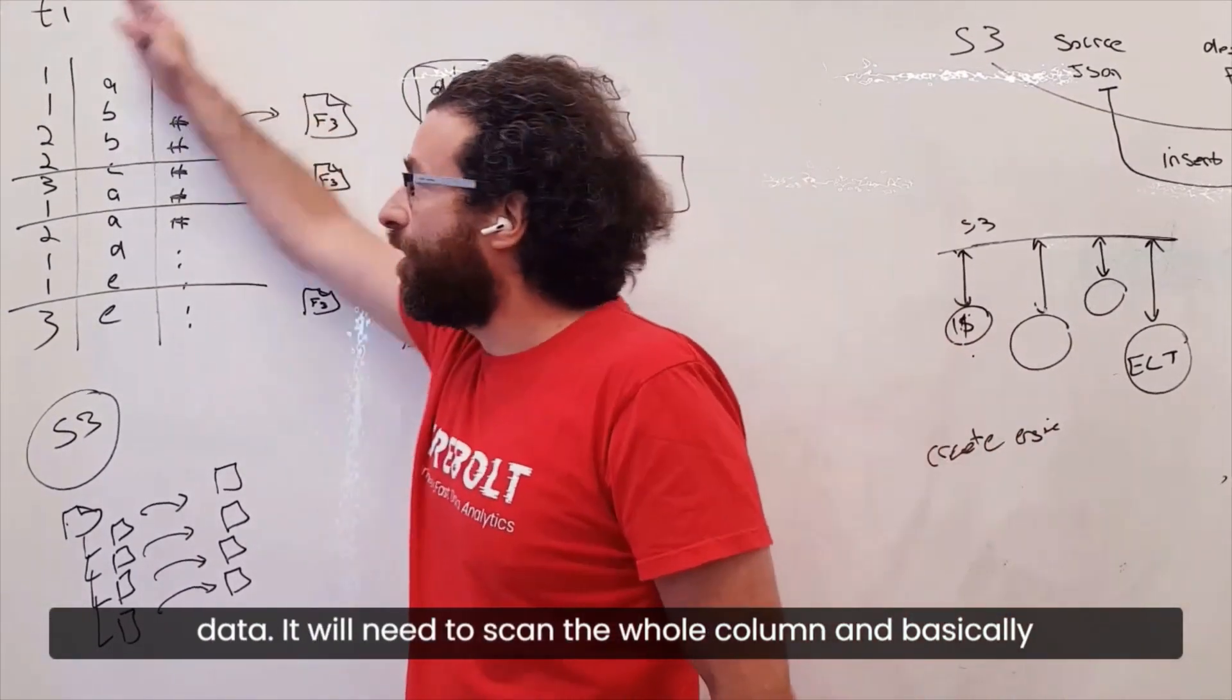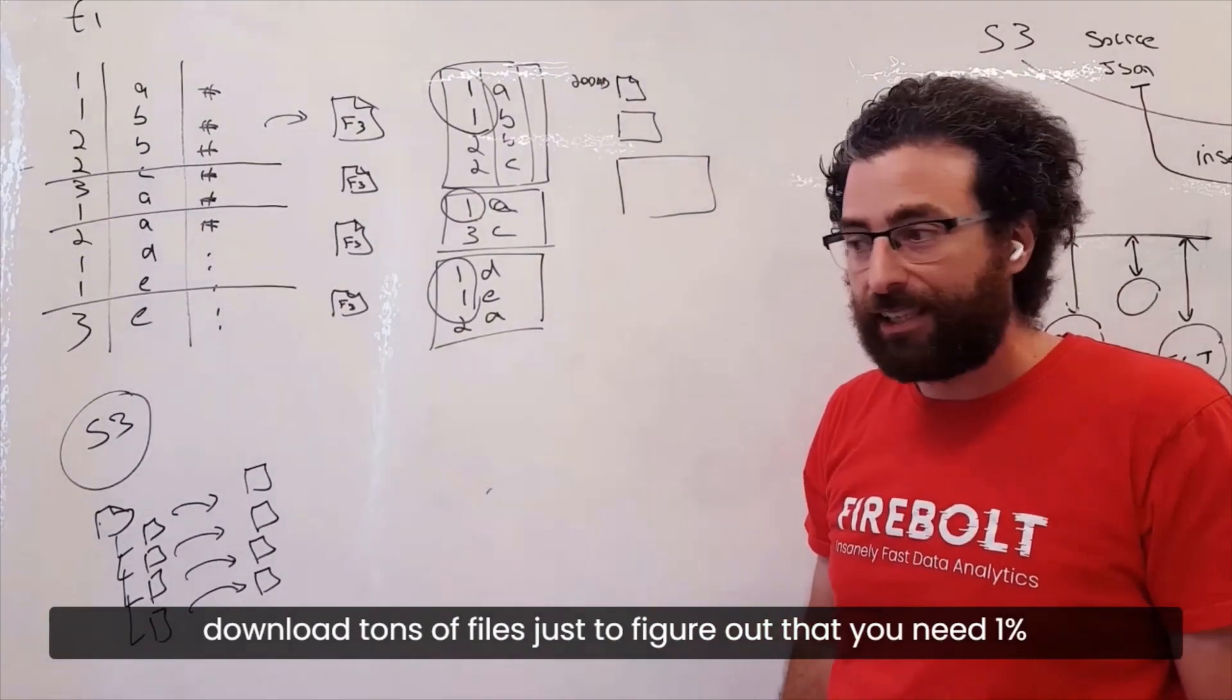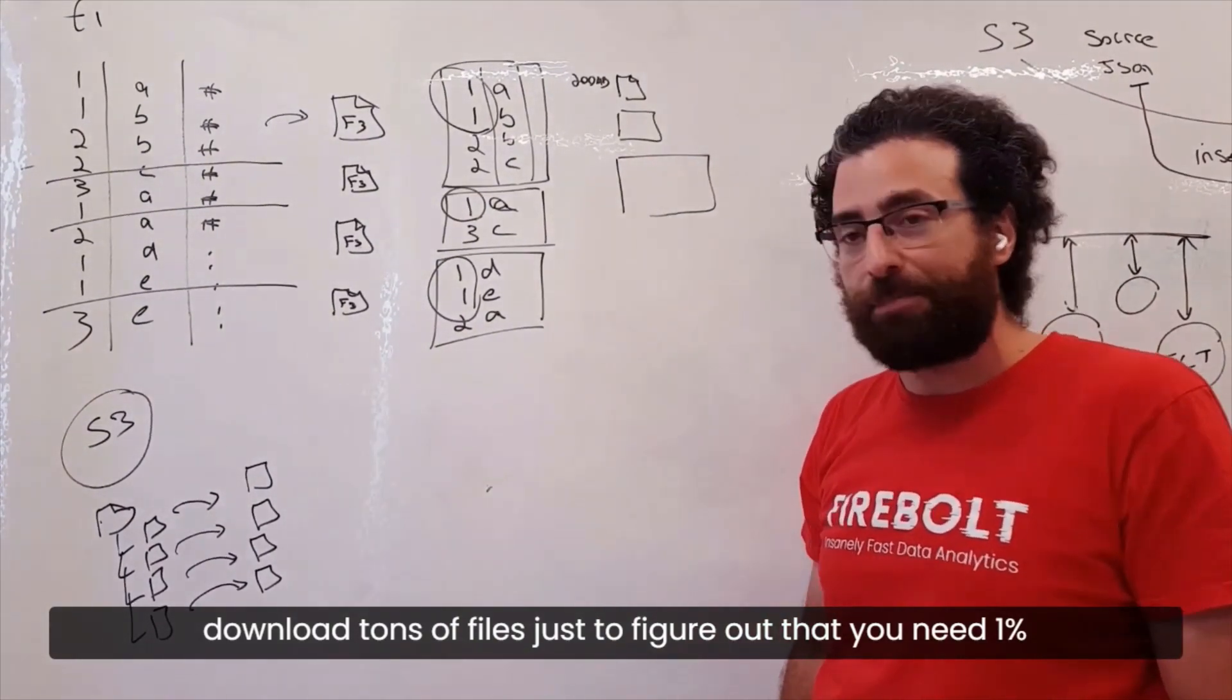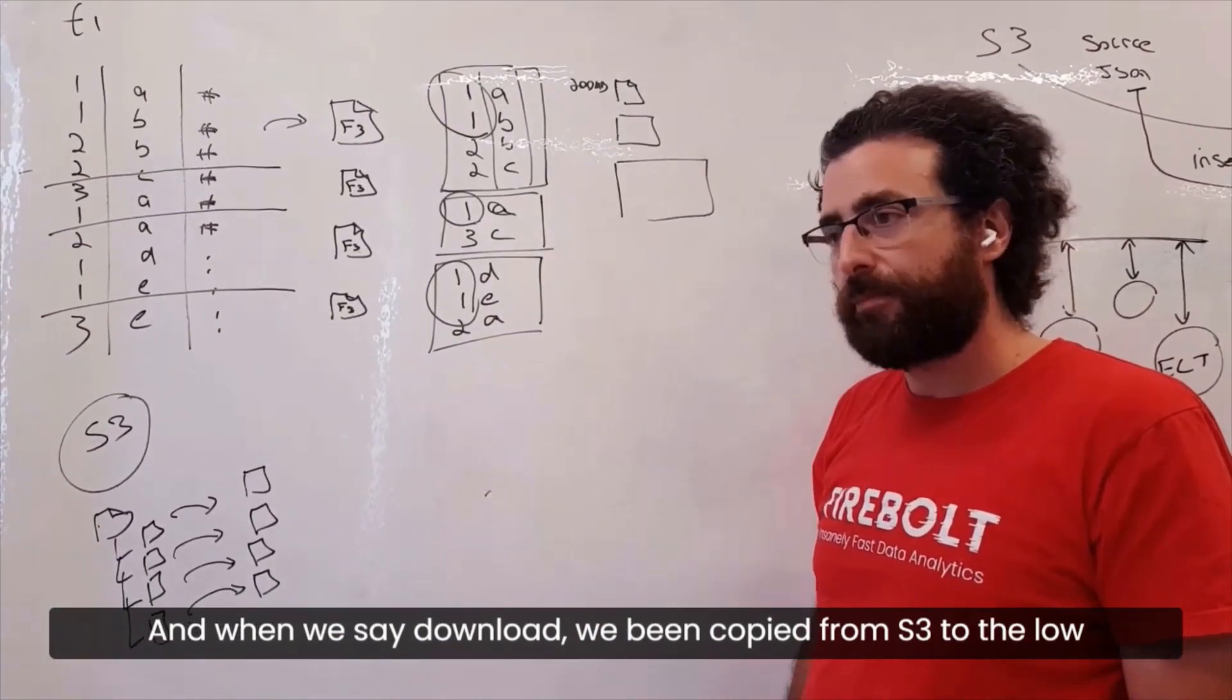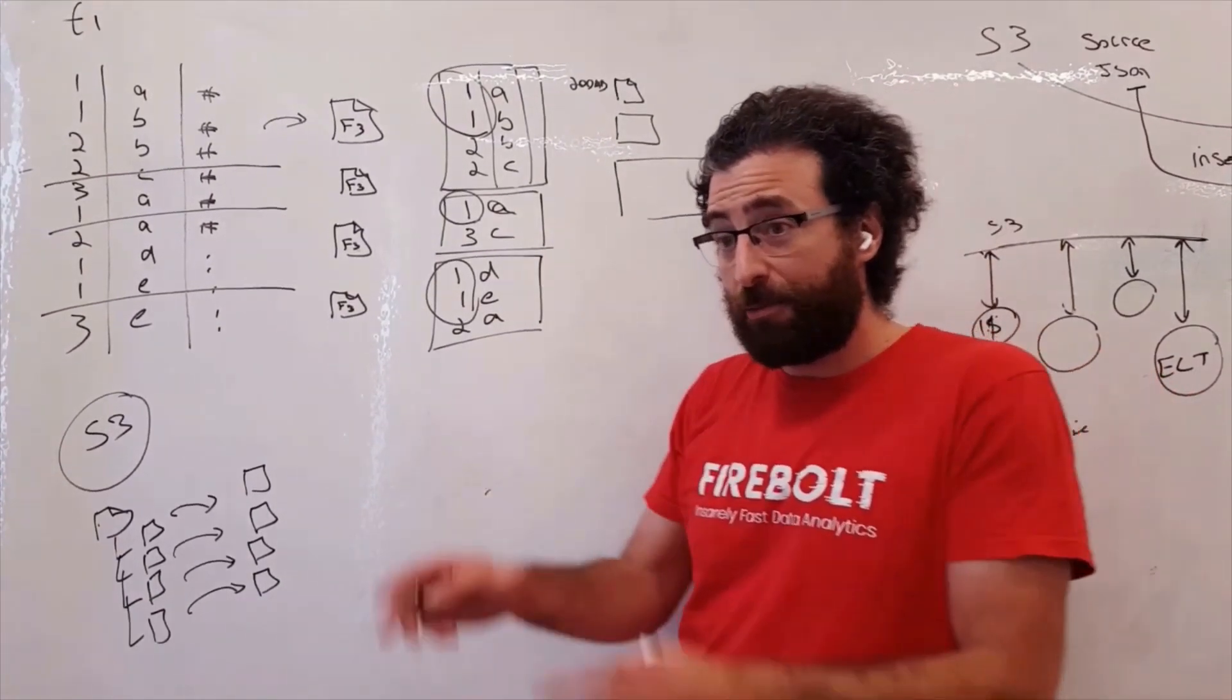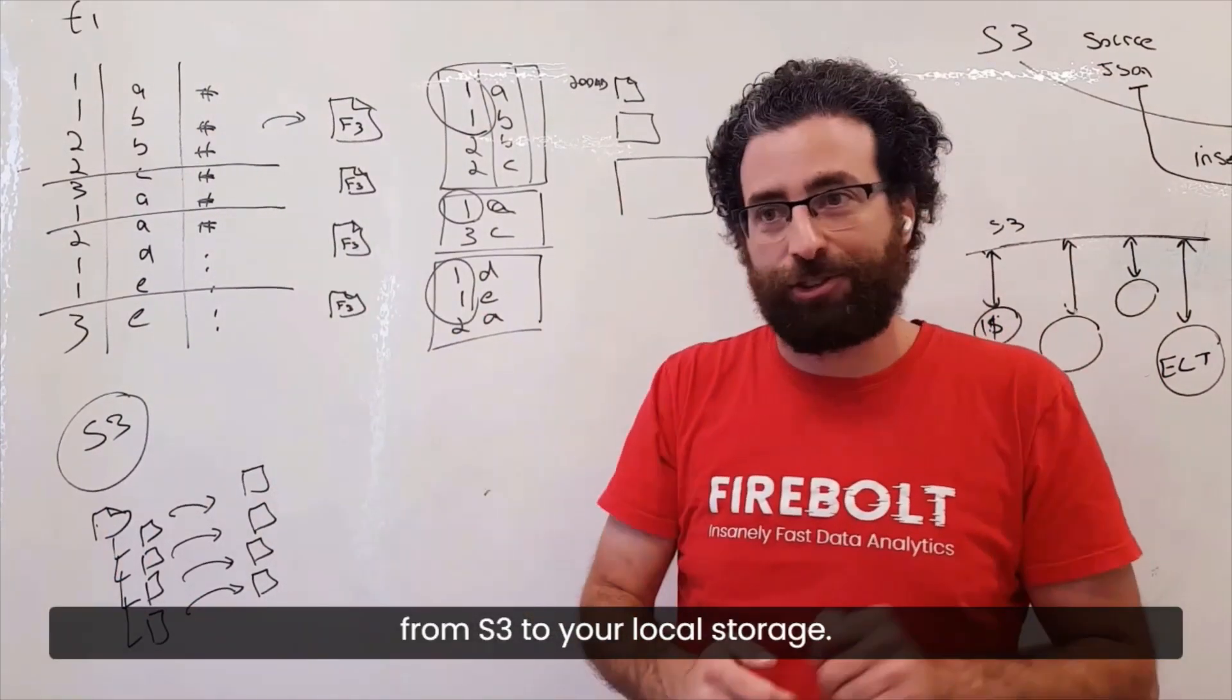It will need to scan the whole column and basically download tons of files just to figure out that you need 1% of the data. And when we say download, we mean copy it from S3 to the local storage of the computer. This is the data from S3 to your local storage.